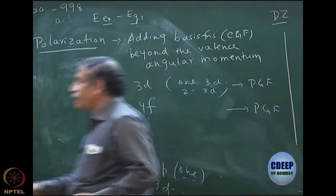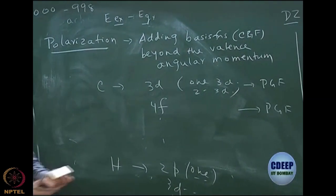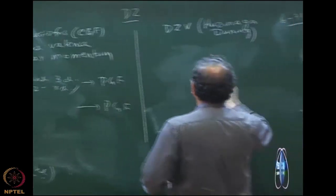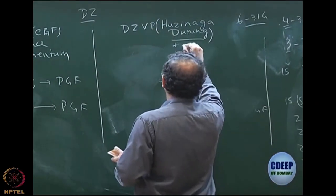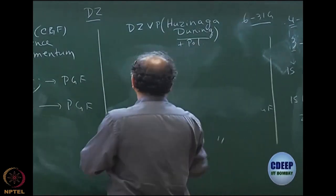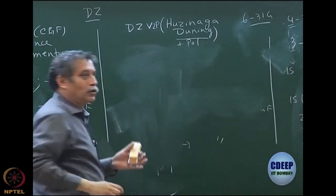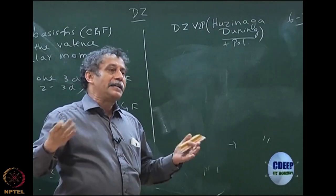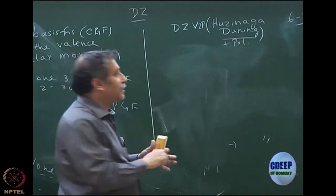For Huzinaga-Dunning basis sets, there is a naming convention: originally they would call it DGV P — just P meaning plus polarization. They would say DGV 2P for two polarization functions, i.e., two D functions. Then you can have D, F, G, and so on — they have different nomenclature.